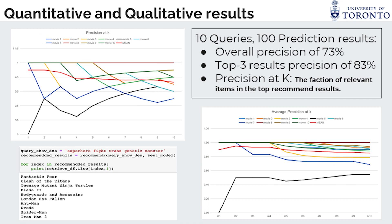We used 10 criteria for testing and predicted 100 recommendations. The overall precision is 73% and the top-three result precision is 83%. From the average precision at k chart, you can see that our model has the ability to give good recommendations at higher ranks.